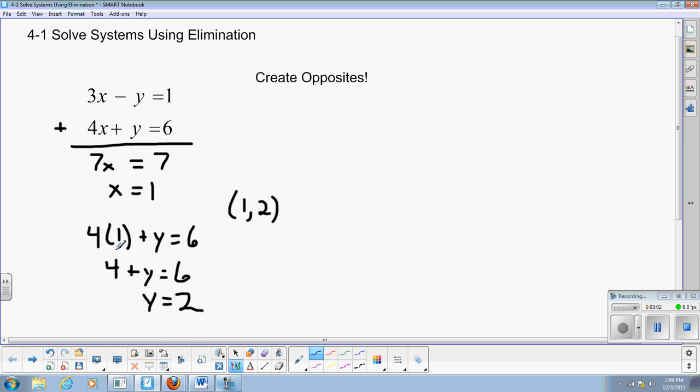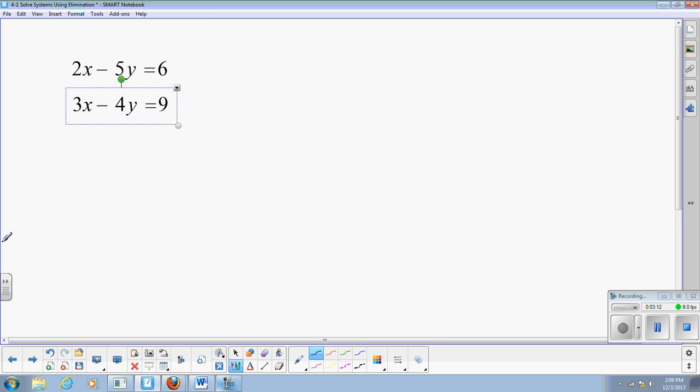All right, and I hope this video doesn't get too long for us. There are two more systems I'm going to show you. There is a lot of detail with this. So if you need to pause for a moment, feel free to do so. Second system. Second system looks like this. I have 2x minus 5y equals 6. 3x minus 4y equals 9.